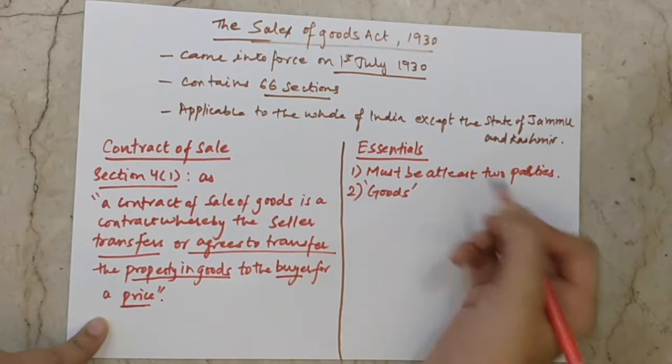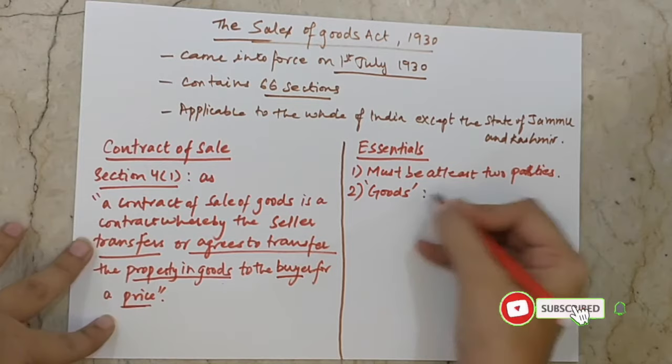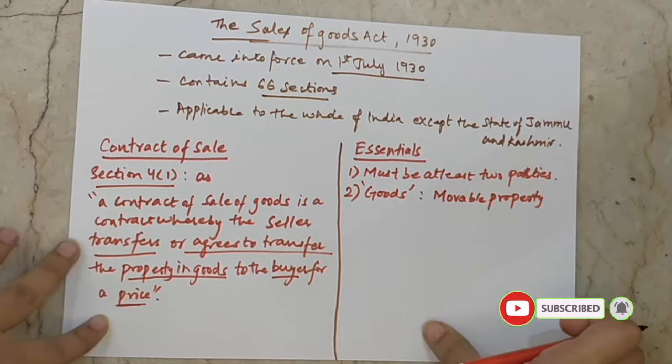The second essential is goods — property in goods. Goods are the subject matter and the basis of the contract of sale. Goods only include moveable properties.